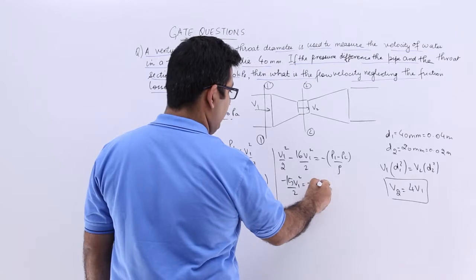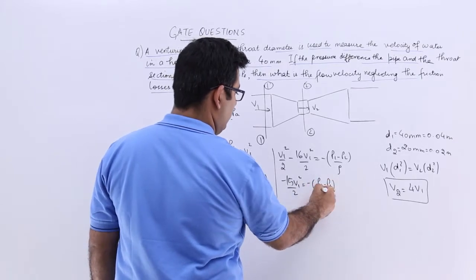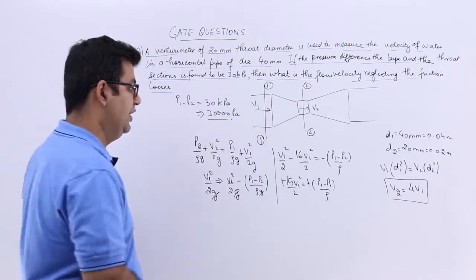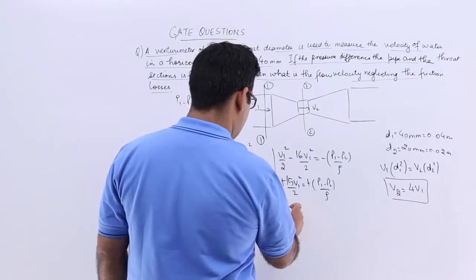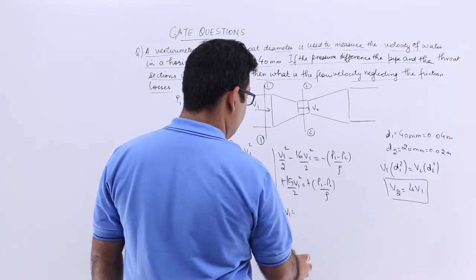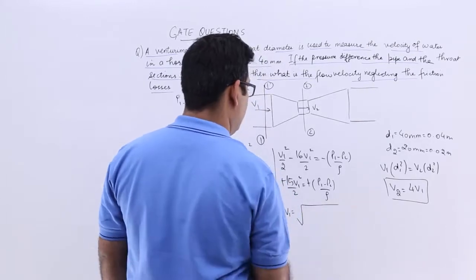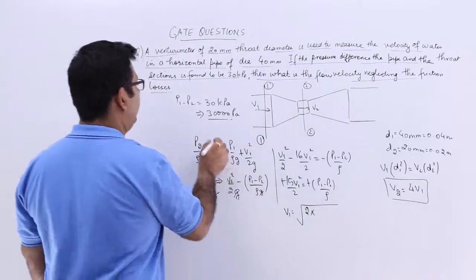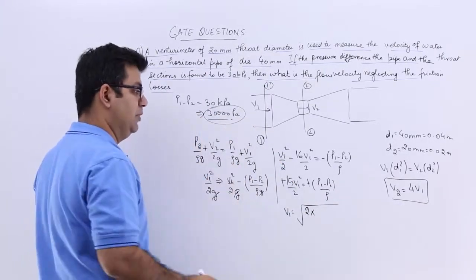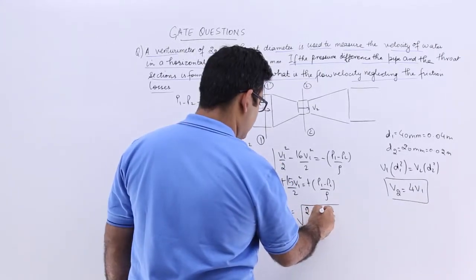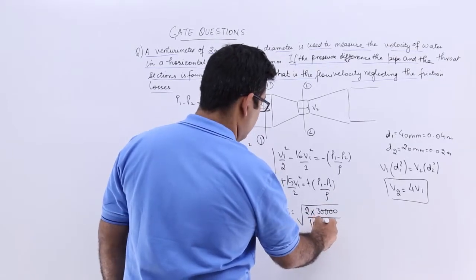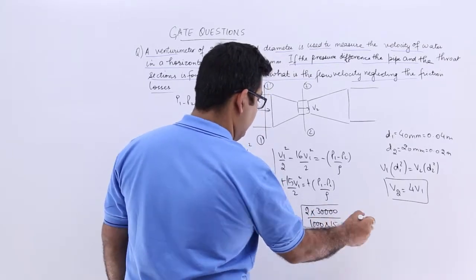So I can just get rid of this negative sign and the value of V1 would then be under root 2 into this, P1 minus P2 is 30,000 Pascals. So you will have 30,000 upon 1,000, that is the density, into 15.